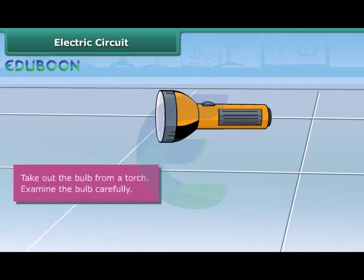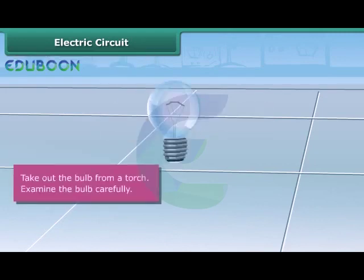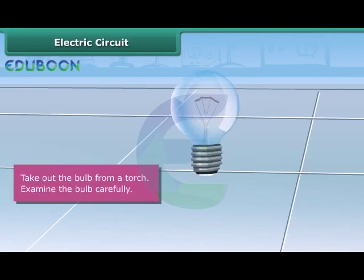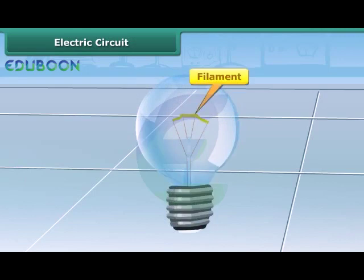Step 1: Take out the bulb from a torch. You can see that the bulb is a small globe of thin glass inside which a coiled filament is fixed on two thick wires.